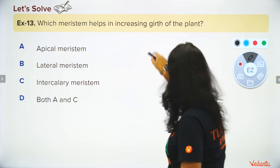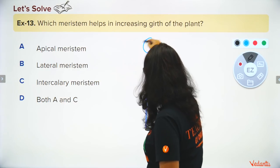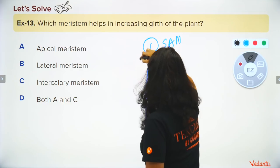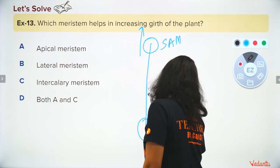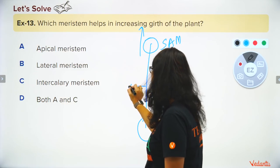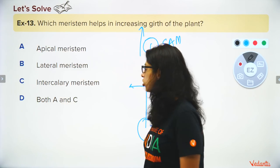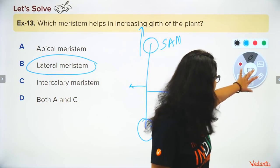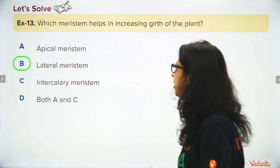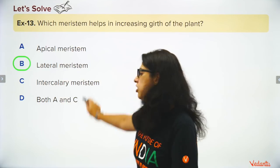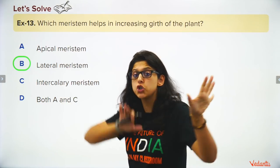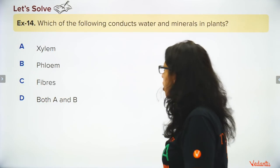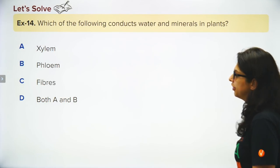Which meristem increases the girth (diameter) of a plant? Shoot Apical Meristem (SAM) increases height; Root Apical Meristem (RAM) grows the root. It is the lateral meristem that increases girth/diameter. Intercalary meristem grows internodes outward; apical meristem grows the tip.